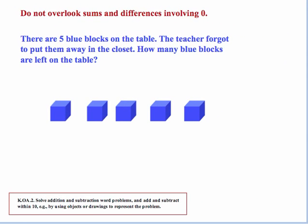Here's another example: there are five blue blocks on the table. The teacher forgot to put them away in the closet. How many blue blocks are left on the table? Well, none got taken away, so we still have the same amount of blocks. So it's five subtract zero for a solution of five. You're laying the foundation for the idea that when you add or subtract zero, you still get the same solution.